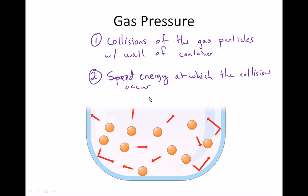If it's very cold in a container and gas particles are moving very slowly, they won't cause as much pressure on the walls. If we heat up the container and the gas particles start moving very fast, those collisions cause a lot more pressure because they're at higher energy.